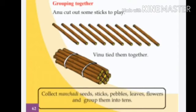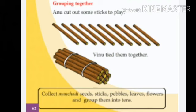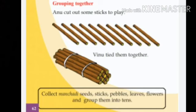Next, we are moving to grouping together. Anu cut out some sticks to play. Koruchu vaddi kalika medit anu moorchu. Vinu tied them together. Vinu adokke kudyuri ketak yang vachu. Now, how many sticks are there? Yathra sticks inda vada inu kye? One, two, three, four, five, six, seven, eight, nine, ten sticks. Okay?